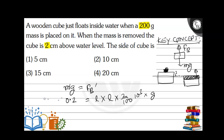Converting everything to SI: m-dash × g = L² × 0.02 × 1000 × g. The g cancels from both sides, so 0.2 = 20 L². Therefore L² = 0.2 / 20 = 1/100.